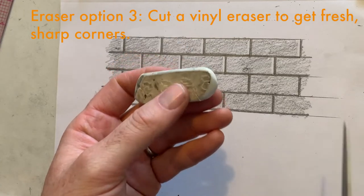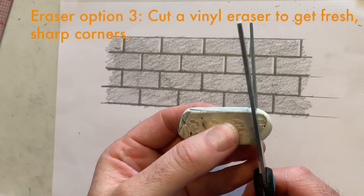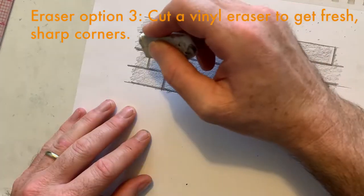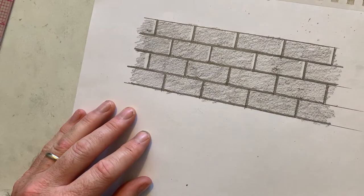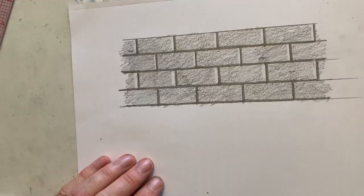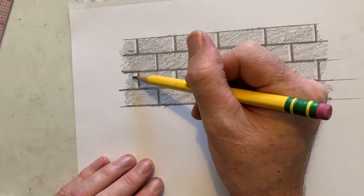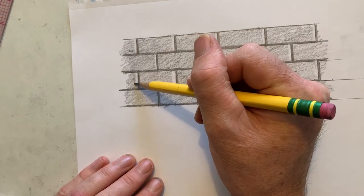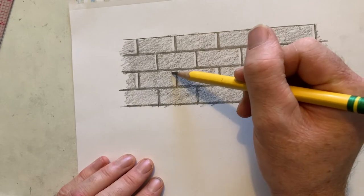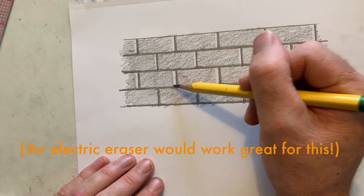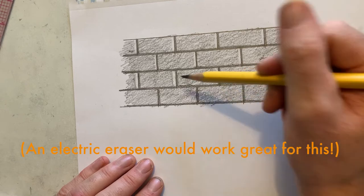An alternative is to use a plastic eraser like this, and then cut it to give it some fresh sharp corners. And if you use an imprecise eraser like this, just do your best, and you can always go back in and add more shading to kind of shape the highlight afterwards. And maybe you've got some other ideas. Like maybe you have a brand new regular rubber eraser on the end of your pencil. So that might work too.